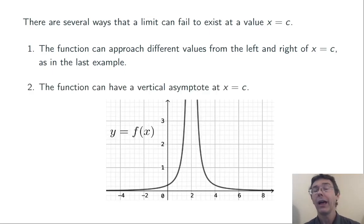Second, you can have a vertical asymptote at x equals c. As x gets closer and closer to 2, in this example, the value of the function grows without bound. There is no number L that this function's value is getting closer and closer to as x gets closer and closer to 2. Limit x goes to 2, f(x) does not exist in this case.